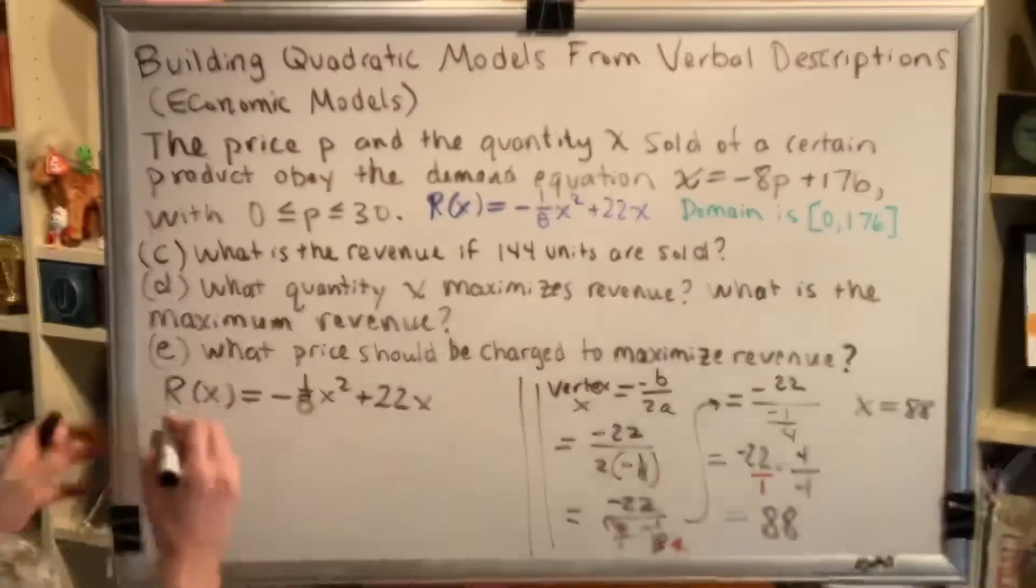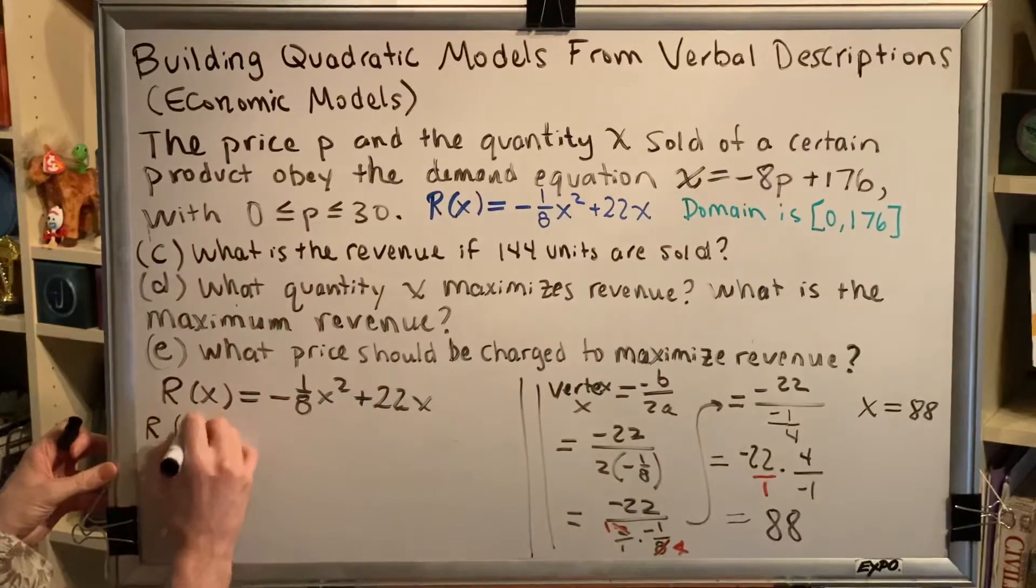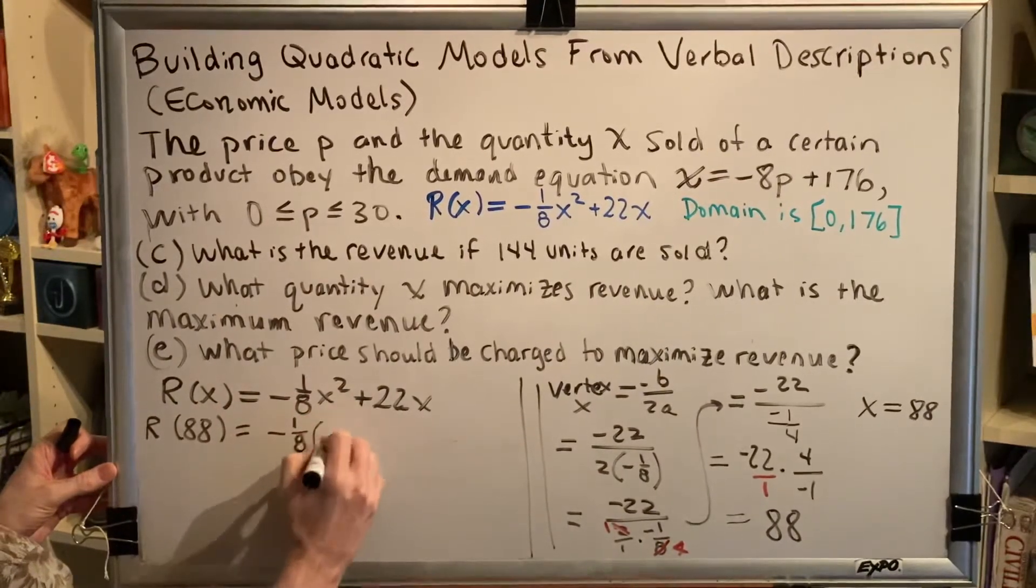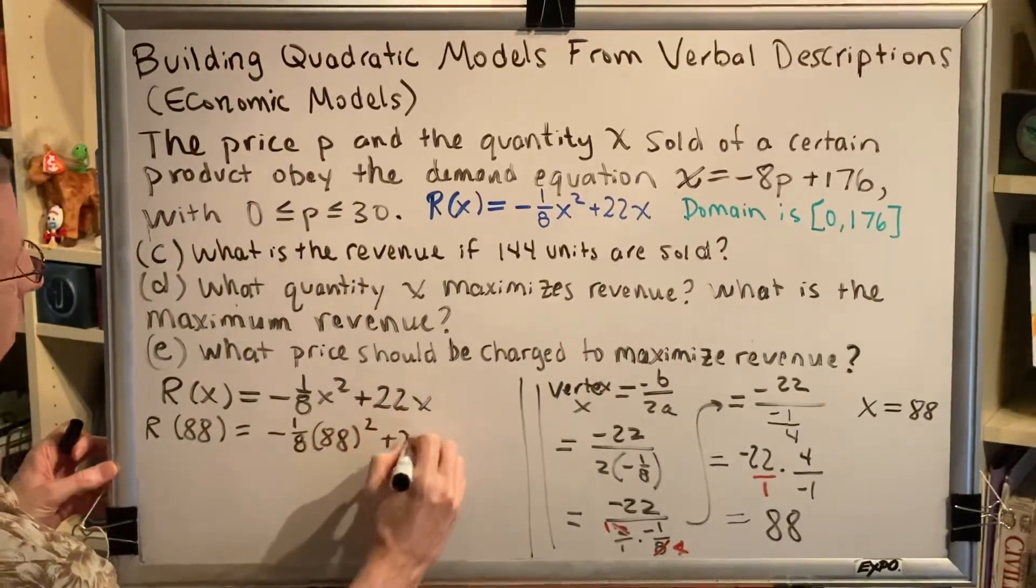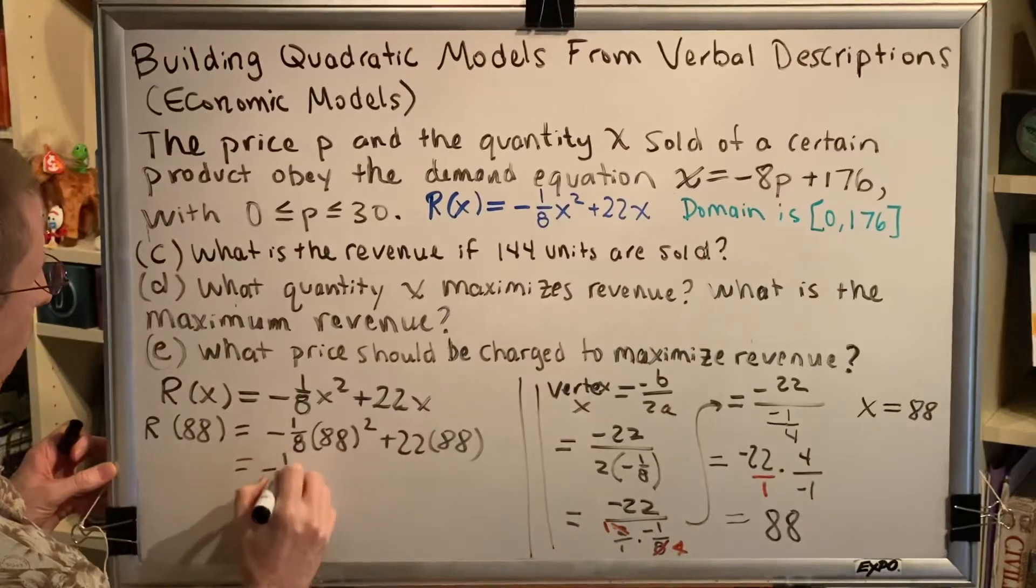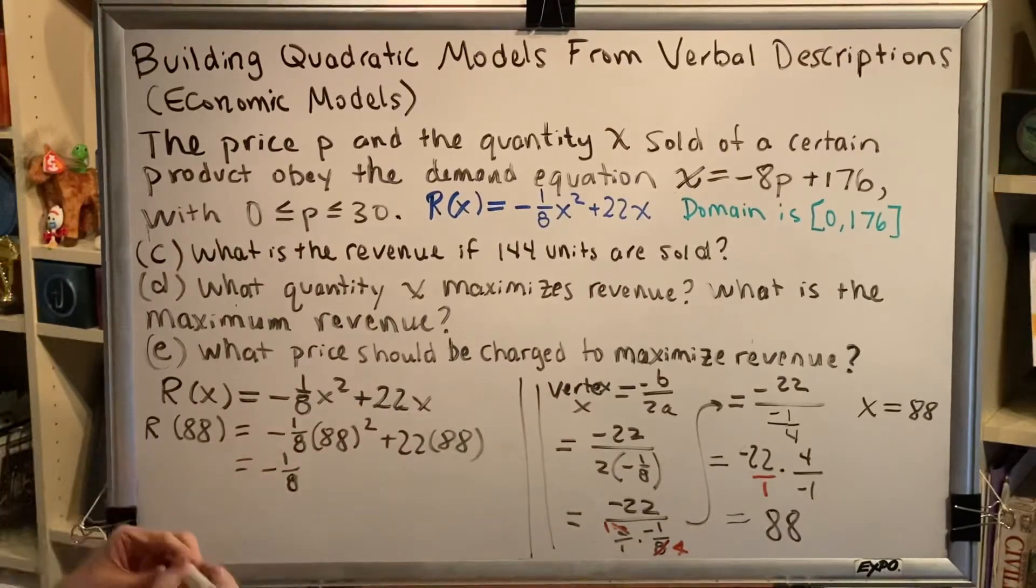we plug in and we say r of 88 is equal to negative 1/8 times 88 squared plus 22 times 88. Using the same steps as before, 88 squared,